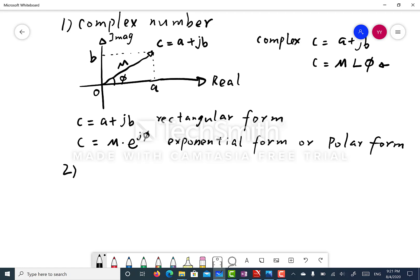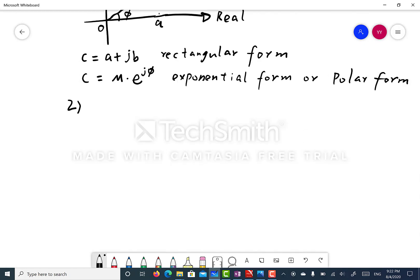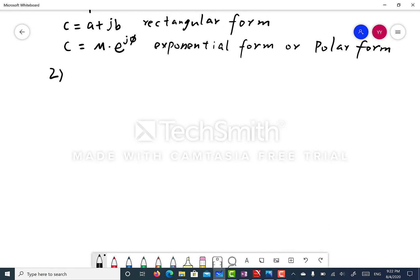In part two, let's talk about how to add a time dimension to a complex number c. In our real imaginary coordinates.